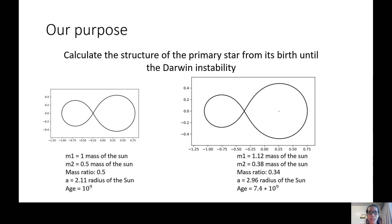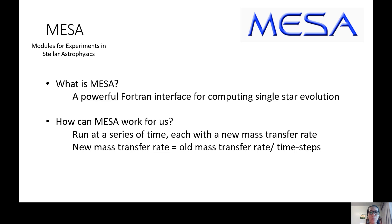The image on the left is the contact binary system at 1 billion years, while the one on the right is the contact binary system at 7.4 billion years, where the primary star has grown slightly bigger. We have scaled them so that they can be distinguishable.